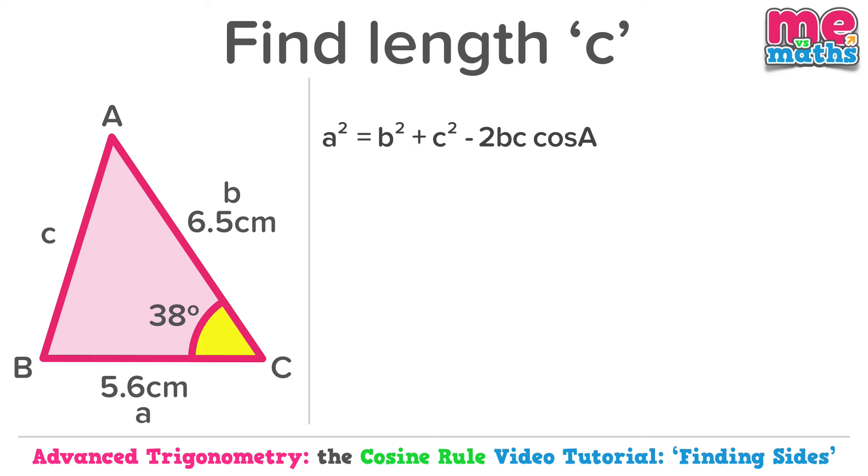The important bit is the angle. As it's angle C that's marked in our triangle and angle A that appears in the cosine rule, we need to swap all our A's with C's and all our C's with A's. We can leave the B's exactly where they are. Let's look at the result.